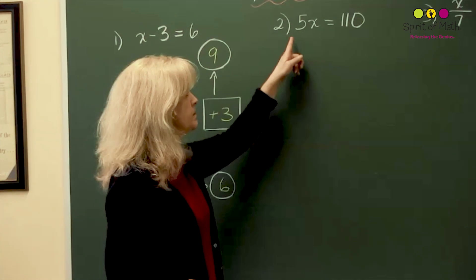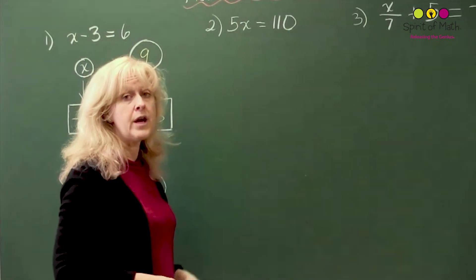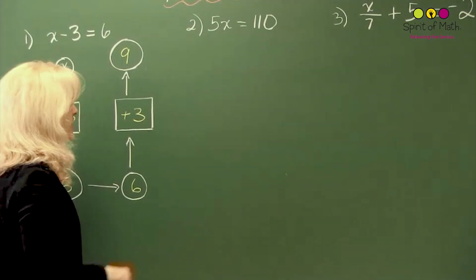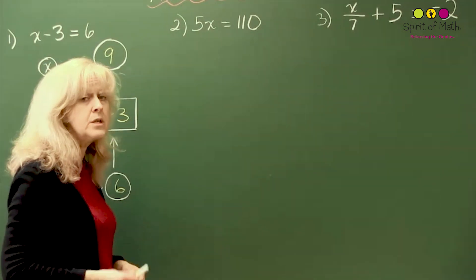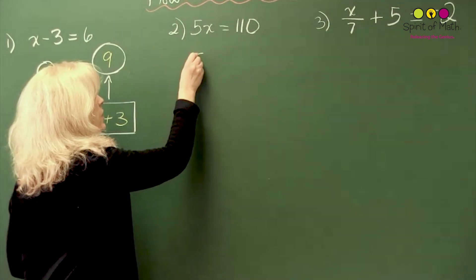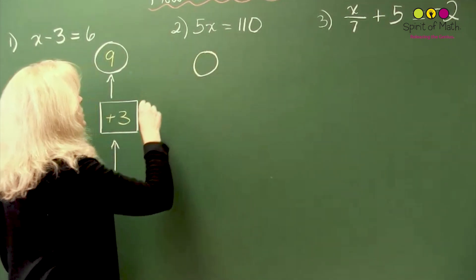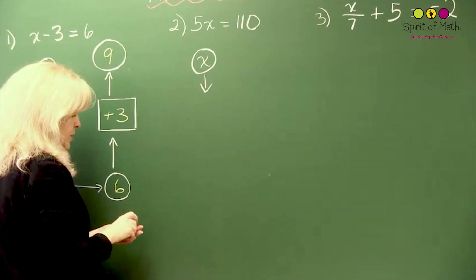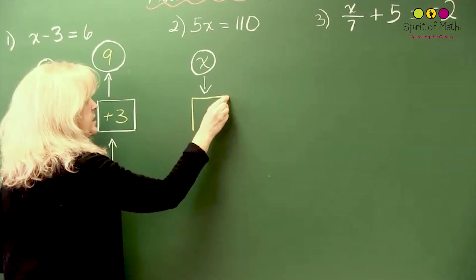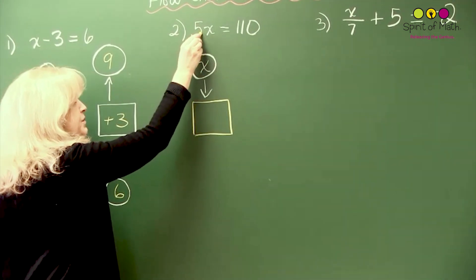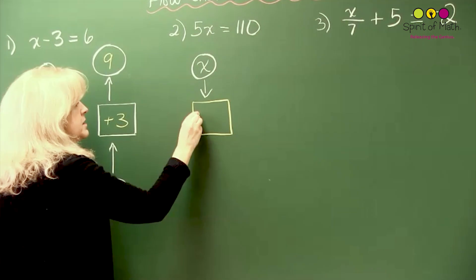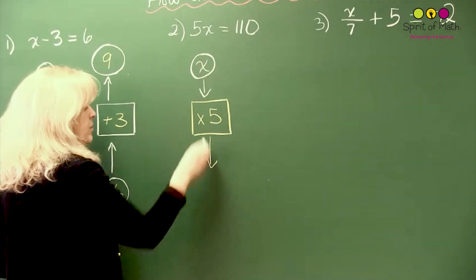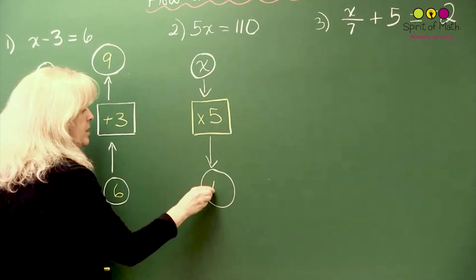Let's go to the next equation and solve for x. To use a flow chart, make sure you know how to do them, because these are pretty easy, but when we get to more difficult questions it may not seem so obvious. You start with your circle, like before, and put the x in there. Then you have an arrow — and what did you do to that x? You multiplied by 5, because it's 5 times x. Then that equals — because it's equal, we put a circle — 110.